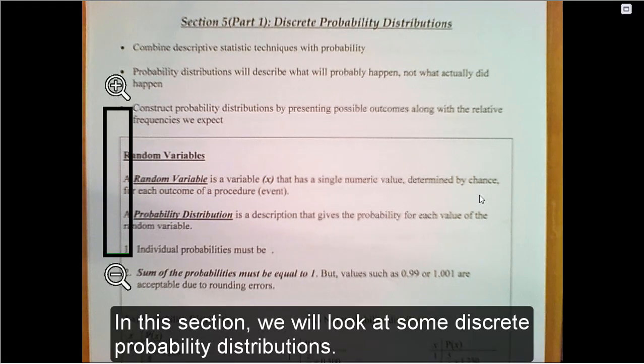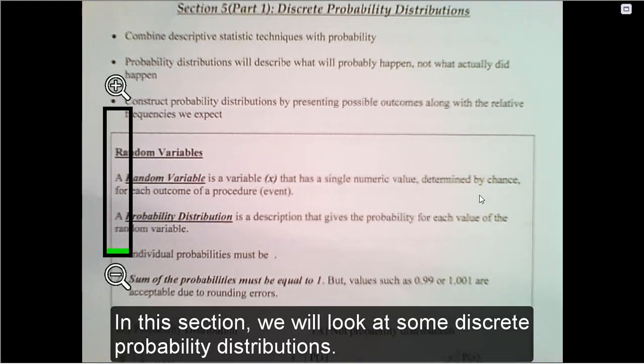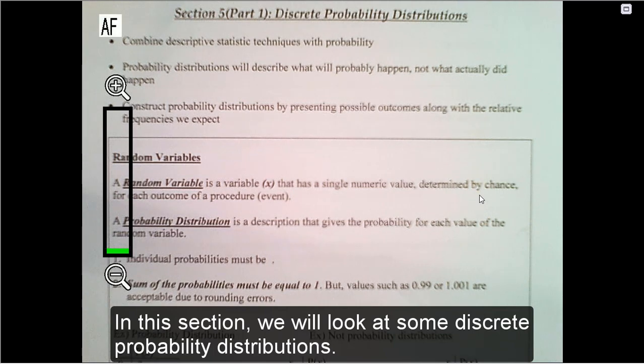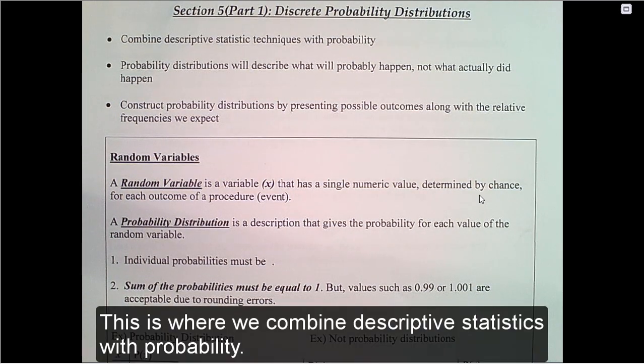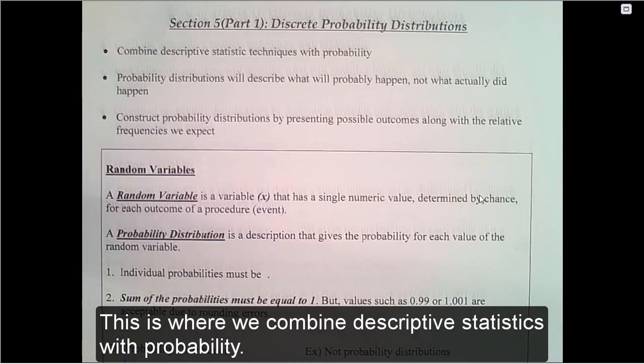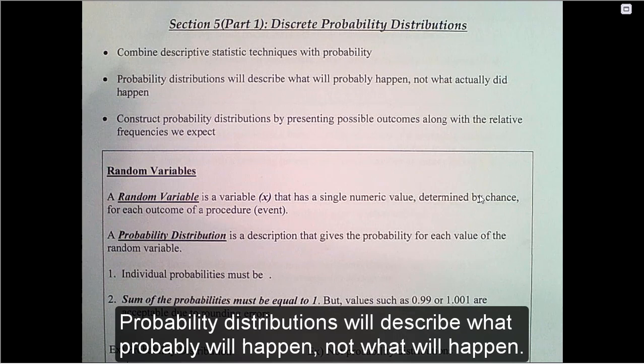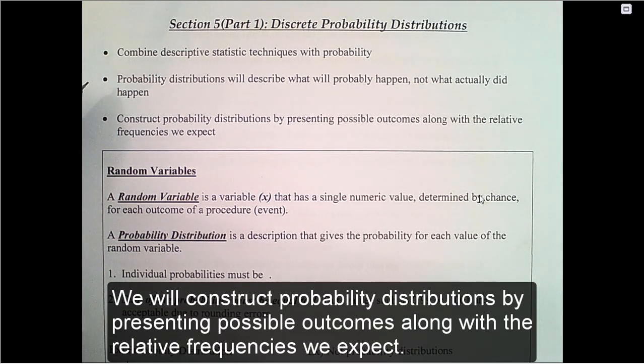In this section, we will look at some discrete probability distributions. This is where we combine descriptive statistics with probability. Probability distributions will describe what probably will happen, not what will happen. We will construct probability distributions by presenting possible outcomes along with relative frequencies we expect.